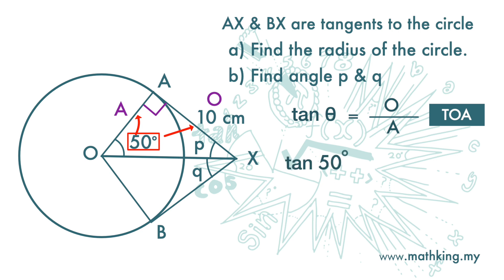Tangent 50 degrees is 10 cm over OA. So OA is 10 over tangent 50 degrees, and we get 8.39 cm, correct to three significant figures.